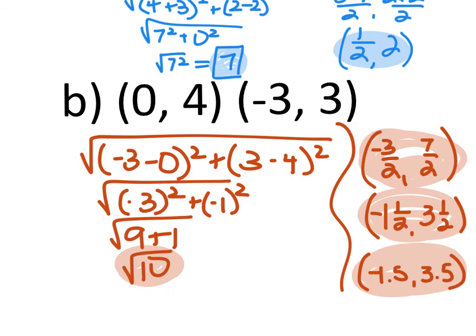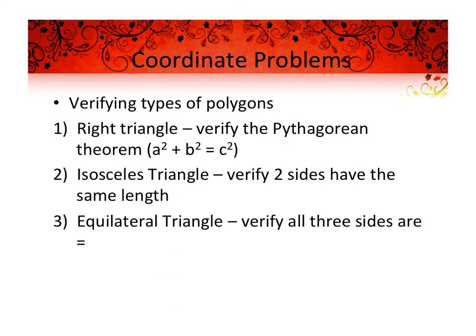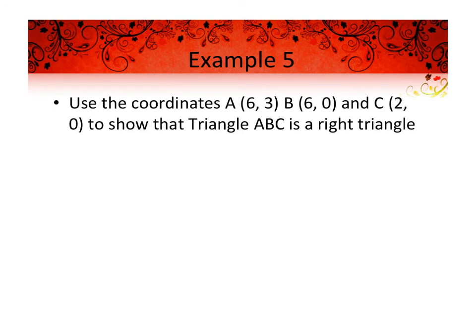You'll start to see how to use distance and midpoint when we get into circles. The last thing in this section is coordinate proof problems — an overlap between geometry and algebra. You'll be asked to prove that three points form a certain kind of polygon. To prove a right triangle, verify that a² + b² = c² using the Pythagorean theorem. To prove an isosceles triangle, verify that two side lengths are the same using the distance formula. To prove equilateral, all three sides must have the same length.